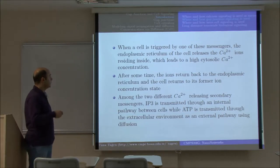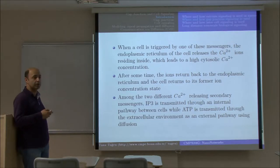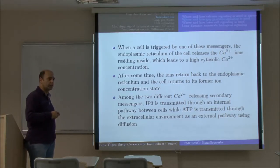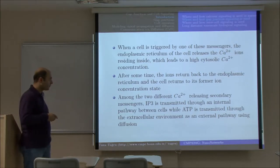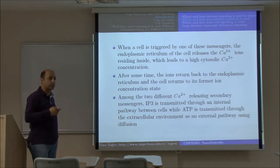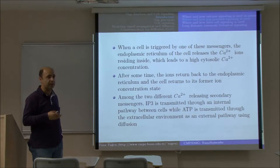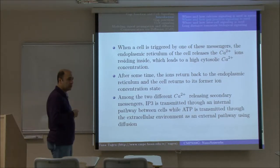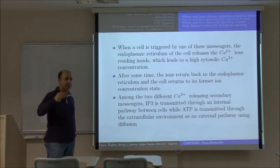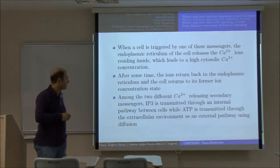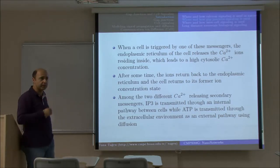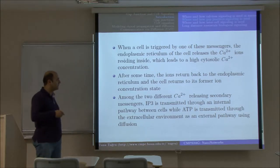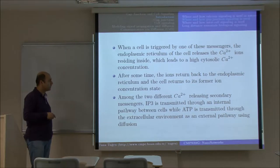When a cell is triggered by one of these messenger molecules, the endoplasmic reticulum and the mitochondria serve as calcium pools — storages where you have many calcium ions. These calcium pools are triggered to release calcium ions into the cytoplasm, so the cytoplasmic calcium ion concentration suddenly and significantly increases. After some time these ions will finally return back to their calcium pools and be stored once again, so the calcium ion concentration in the cytoplasm will decrease again.